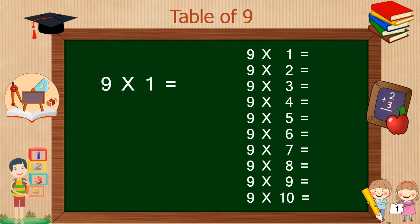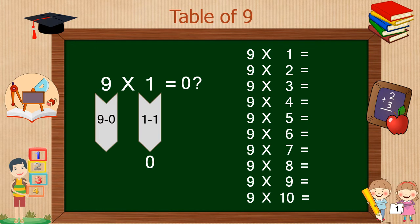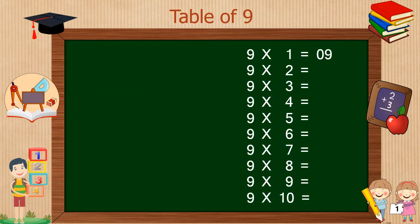To find 9 times 1, we have to take just one digit before 1, that is 1 minus 1 is 0, so 0 is our first digit. And to find the second digit, we have to subtract 0 from 9, that is 9. So 9 times 1 is 9.